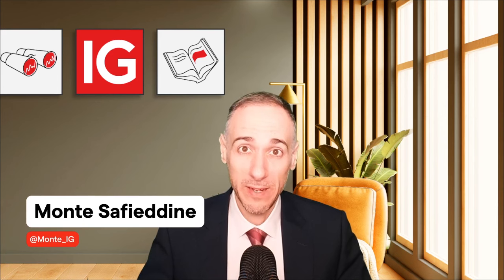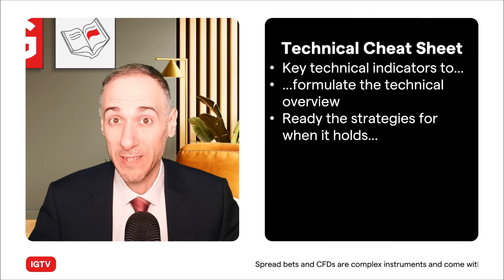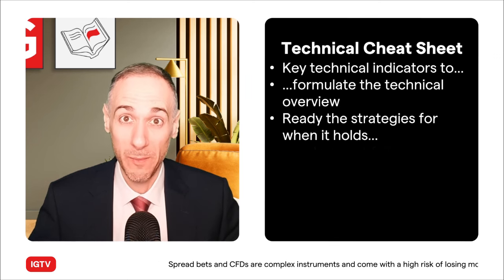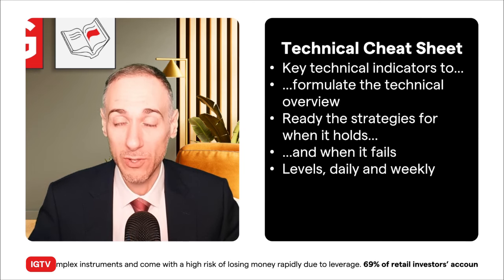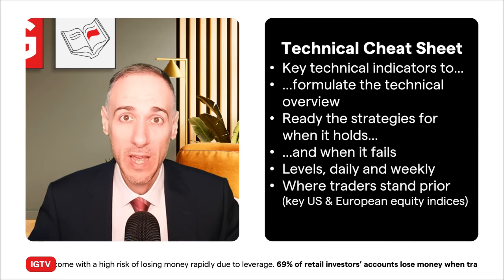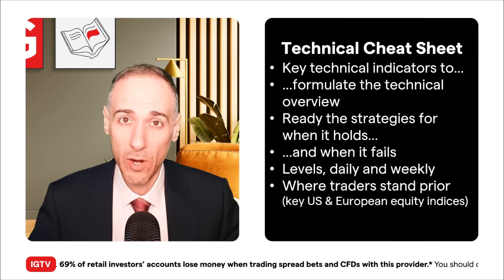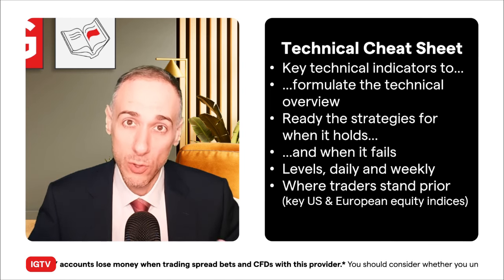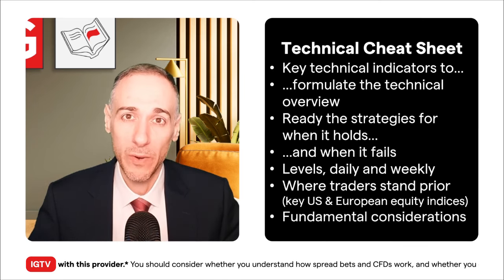Welcome back, Mark here on Amazon IG with another technical cheat sheet video where we take a look at key technical indicators to formulate a technical overview. That way we can prep strategies — if the overview holds great, but if you agree to disagree we need strategies ready for when it fails. We'll look at levels in both daily and weekly timeframes, as well as sentiment. We don't have COT speculator data for this one, so we'll look at where they stand on key US equity indices before mapping sentiment onto the chart plus fundamental considerations for this week.